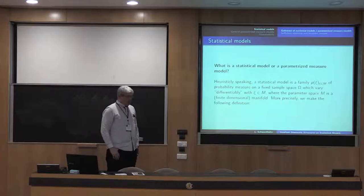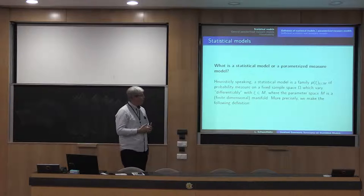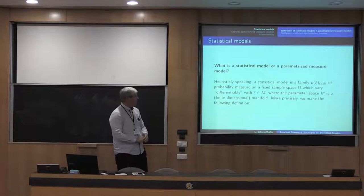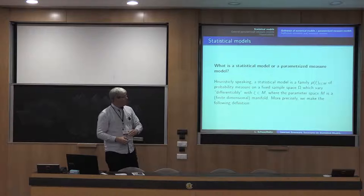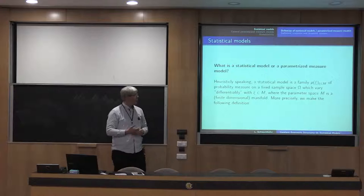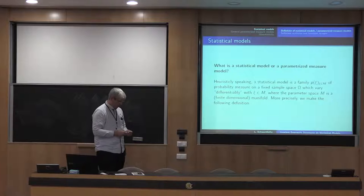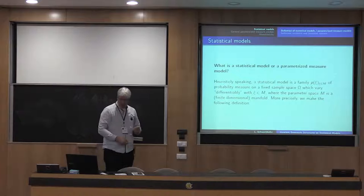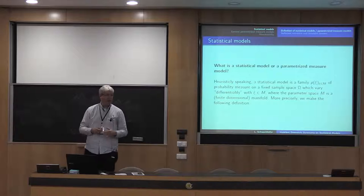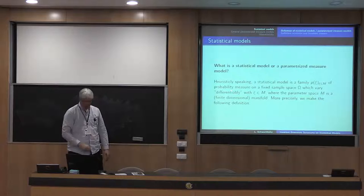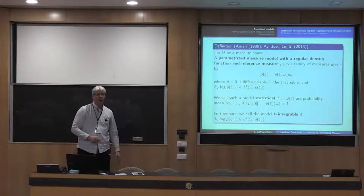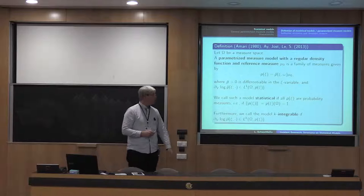Let me start with the notion of a parameterized measure model. You have a certain parameter usually taken from a manifold M, and a fixed sample space omega. You want a notion of measures — finite measures or probability measures — pi of psi, which varies smoothly with psi. There are several ways to make this precise, for example by Pistone and Senti. For the beginning I will take a very basic and naive assumption going back to Amari from the 1980s with some slight modification.